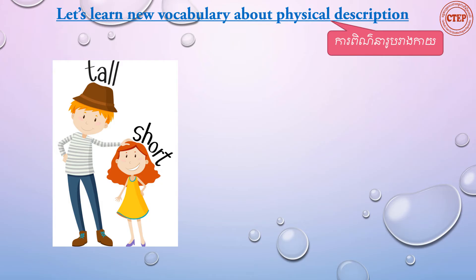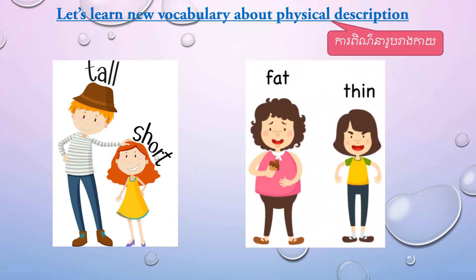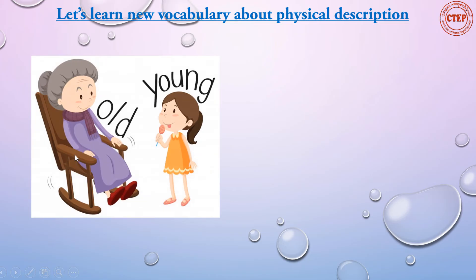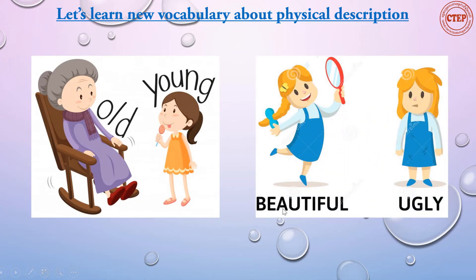Let's take a look. Listen and repeat after me: tall, short. Next: fat, thin. And then: old, young. Next: beautiful, ugly. Okay, those are all the key words about physical description.